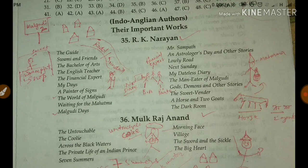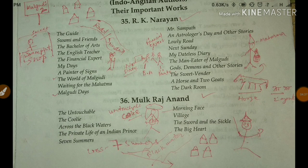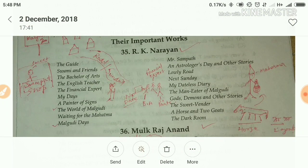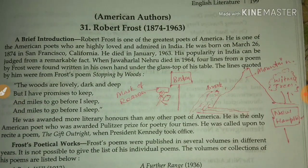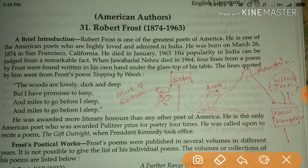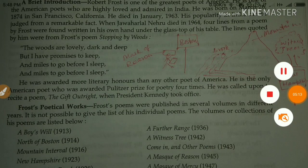So create your own stories for other authors' works, like Mulk Raj Anand. For Robert Frost, you can imagine Robert Frost standing here with a wheel, wearing a Mask of Reason, going to Boston and then to New Hampshire. There is a tree, a big mountain, a small brook — and the works here are: Boys Will, North of Boston, Mountain Interval, and others. I hope you enjoyed the video, bye, take care!